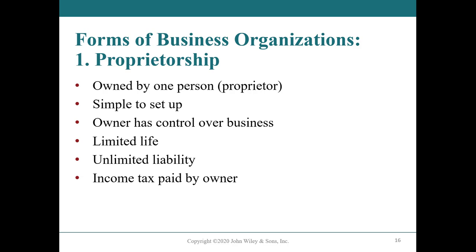The first one is proprietorship, which may also be referred to as sole proprietorship. This is when it's owned by one person, the proprietor. It is simple to set up because you can just set it up right now. You can go out and take one of your books and go sell it on Kijiji, and technically you are a sole proprietor.